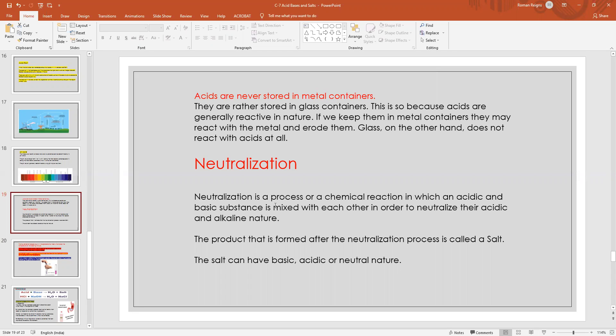Or a glass utensil, but not in iron jars. Why? Because metal will react with acid and slowly the metal will corrode. That's why we are not storing acid in iron jars. Next, let's see what happens when an acid and base react.